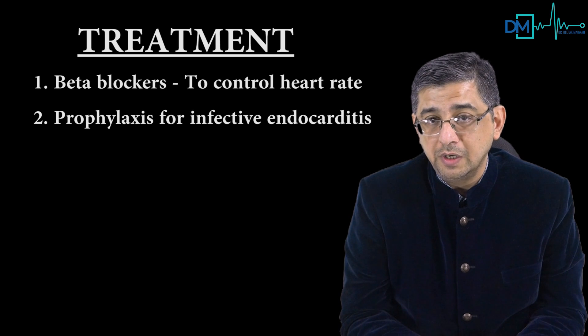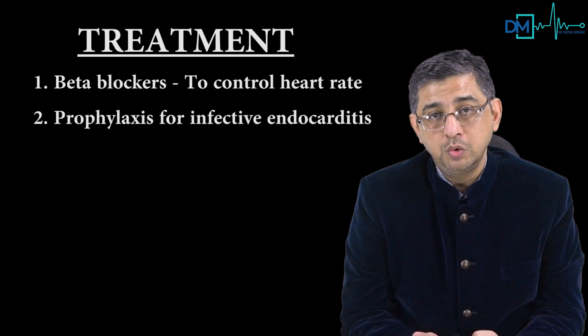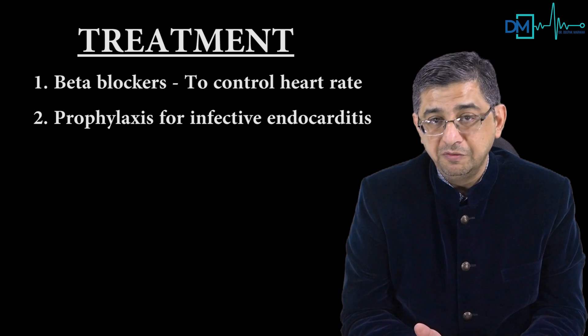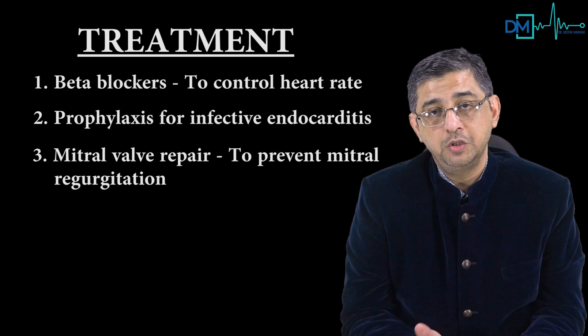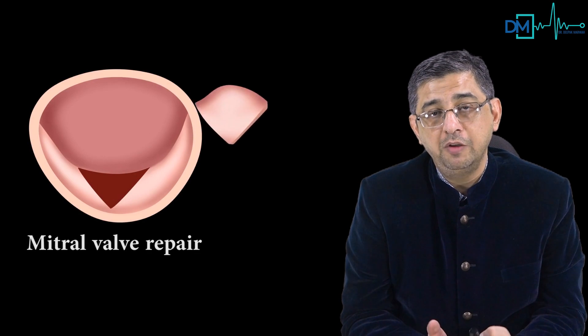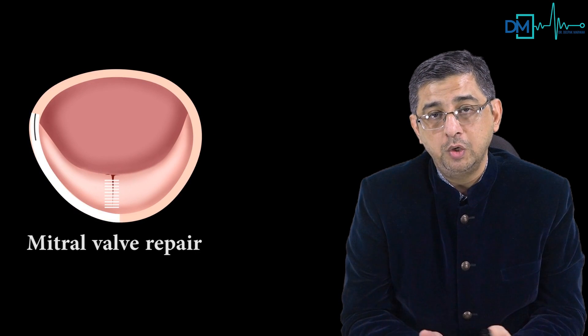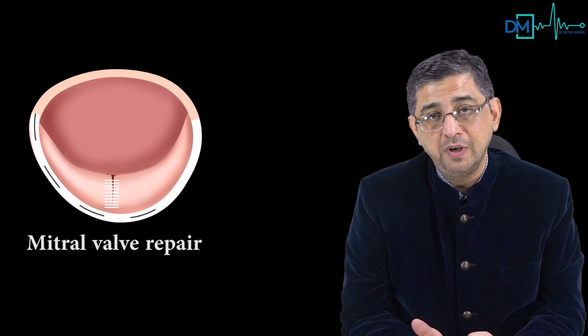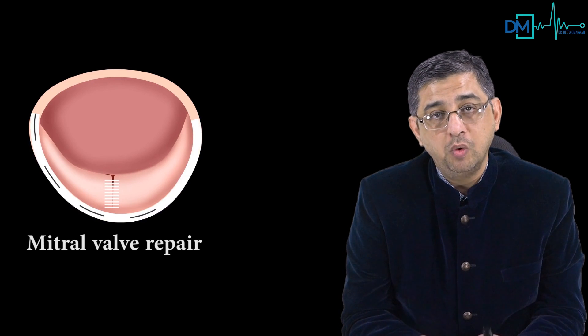To prevent mitral regurgitation, surgery is indicated — specifically mitral valve repair. The surgeon excises defective redundant valve tissue and places sutures to achieve proper coaptation of the valve leaflets, restoring a competent bicuspid mitral valve. This prevents blood leakage and avoids acute decompensated congestive heart failure. These are the key details for mitral valve prolapse.